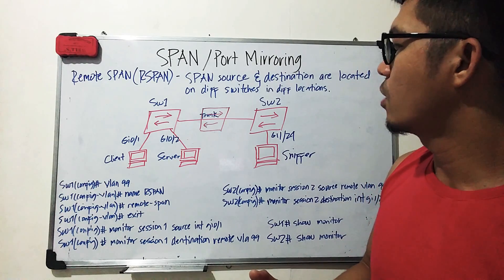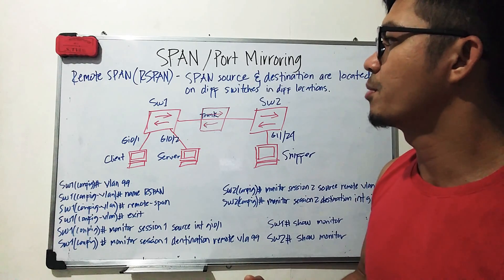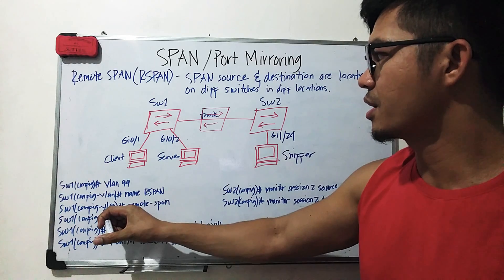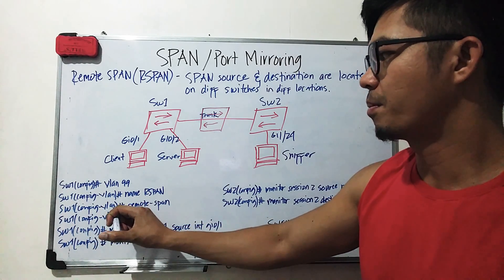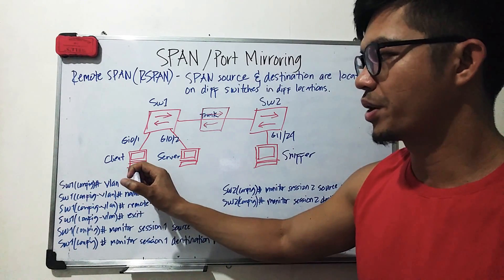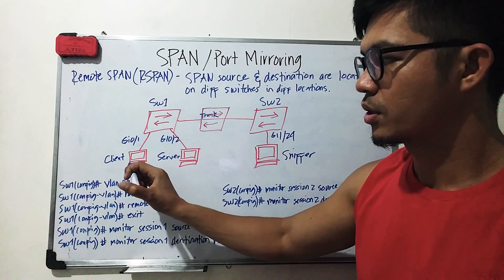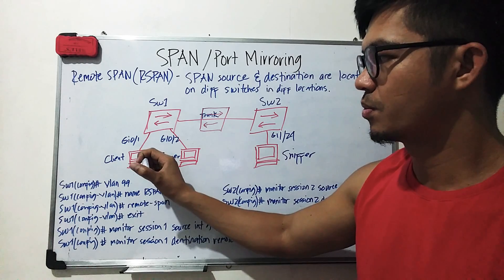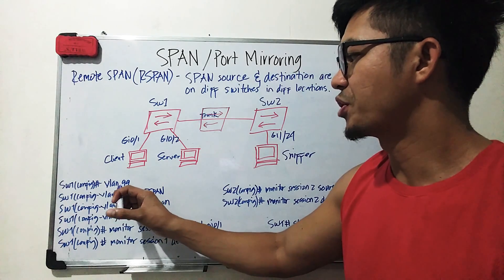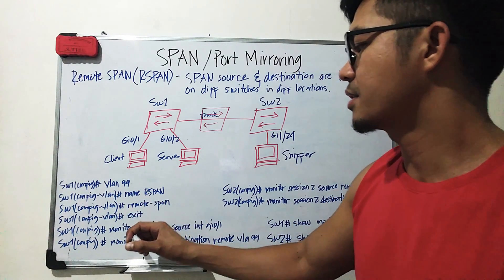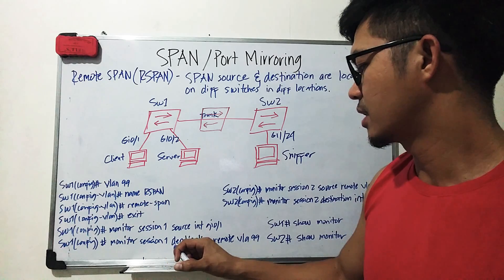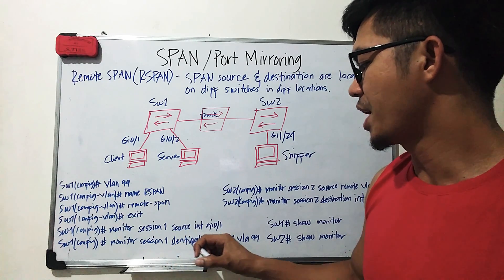Let's talk about how to configure remote SPAN. Here we are configuring the source switch — basically the switch where the source is connected to. First, you need to configure the VLAN, because in this scenario our destination is actually a remote VLAN.